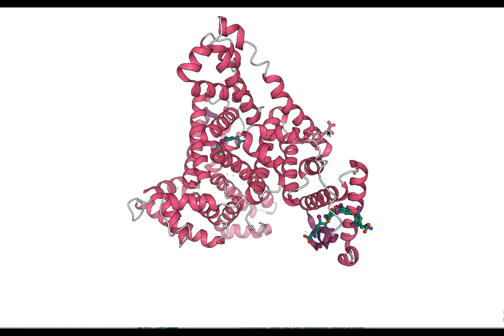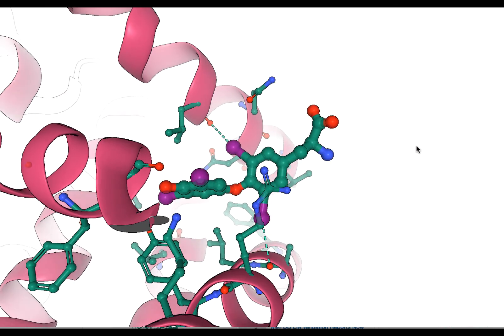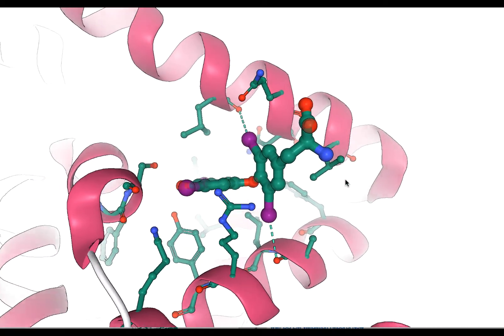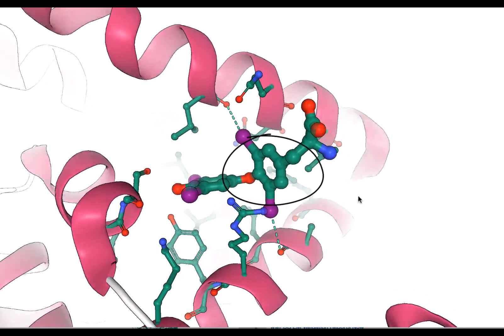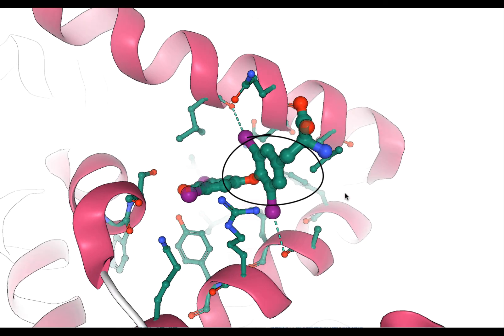If we zoom in to examine the interactions of one of these thyroxins, we notice that two iodines bound to this one ring of thyroxin form two halogen bonds.